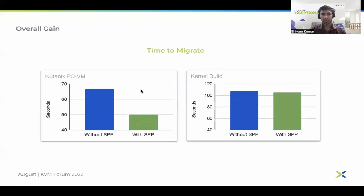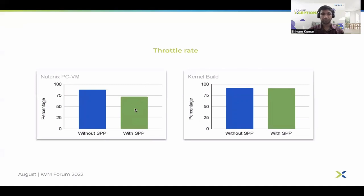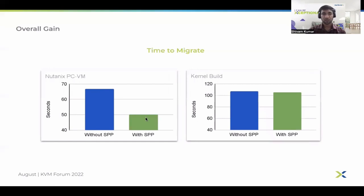Comparing time to migrate with and without SPP for both workloads: for Nutanix PCVM we see a significant decrease in time to migrate with SPP, and for kernel build the decrease is not that significant. This makes it clear that for workloads like Nutanix PCVM, live migration with SPP will be pretty effective. Also note that the effective throttle rate decreases with SPP because the throttling logic is flawed for SPP. We need to adjust the throttling logic to match the effective throttle rate with SPP to the level without SPP, and once we do that, we expect the time to migrate will further decrease with SPP.